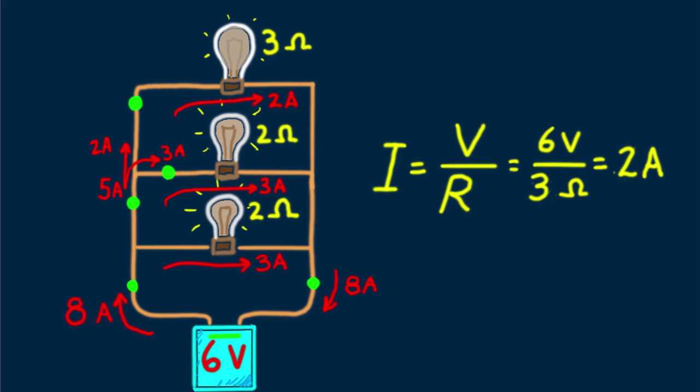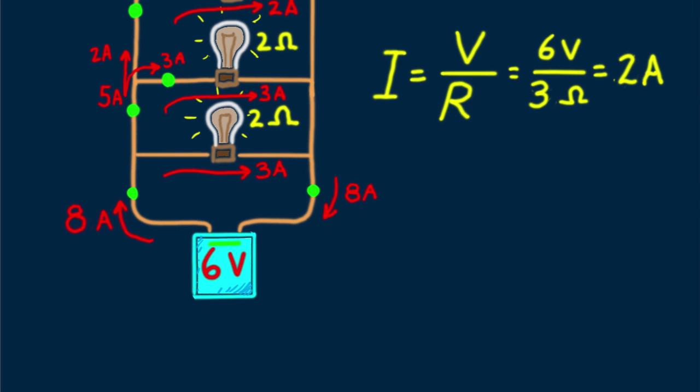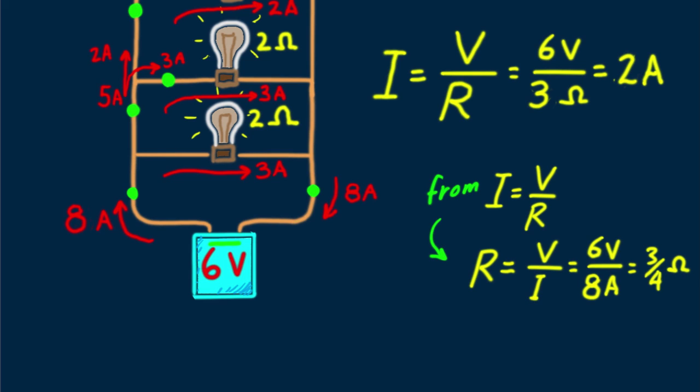There's an important point about parallel circuits. From Ohm's law, 8 amps drawn from 6 volts means the overall resistance of the circuit must be less than the resistance of any single bulb, less than 2 ohms. What would that overall resistance be? If we rearrange Ohm's law and solve for resistance, we get R equals V over I. 6 volts divided by 8 amps gives 3 quarters of 1 ohm, appreciably less than the resistance of any bulb in the circuit.